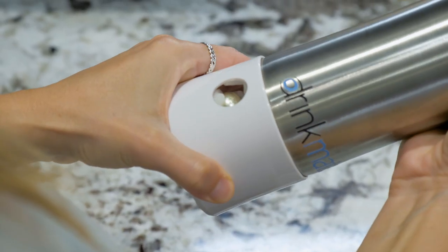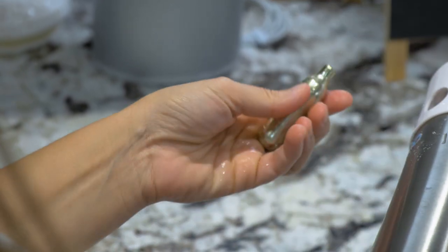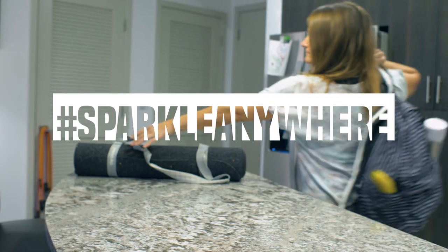To remove the cartridge, turn the bottom cap to open the cartridge window. Tap the bottle against your palm and the cartridge will fall out. Sparkle anywhere, with Drinkmate.